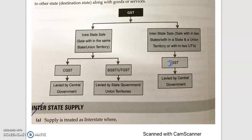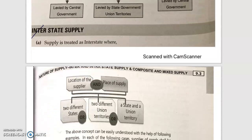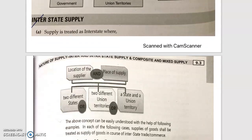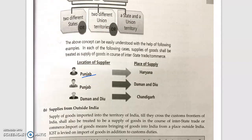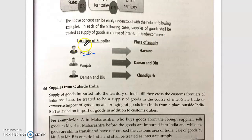Next is interstate supply. Interstate supply means when the goods are supplied to another state — that is, the location of the supplier and the place of supply are different. If they are in two different territories, states, or state and union territory, it is interstate. For example, where the location of the supplier is in Punjab and the place of supply is in Haryana, it is considered interstate supply.